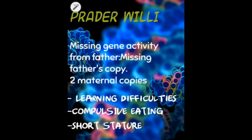Prader-Willi and Angelman are both disorders caused by abnormalities on chromosome 15. Prader-Willi is when the father's copy or gene activity from the father is missing, which leads to the child having two maternal copies. This disorder leads to learning difficulties, compulsive eating, and short stature.